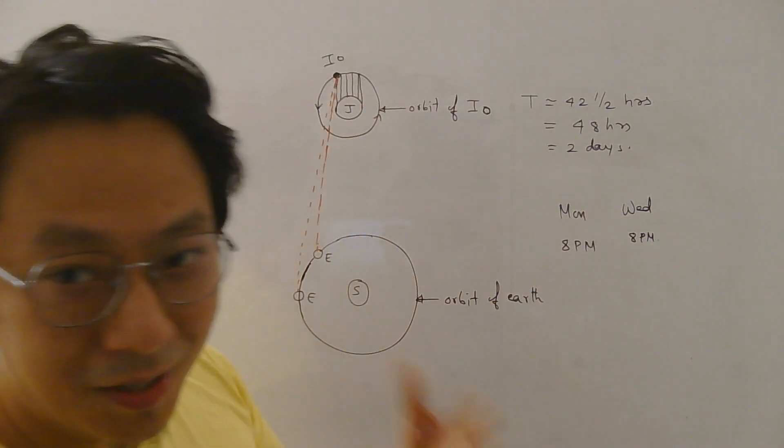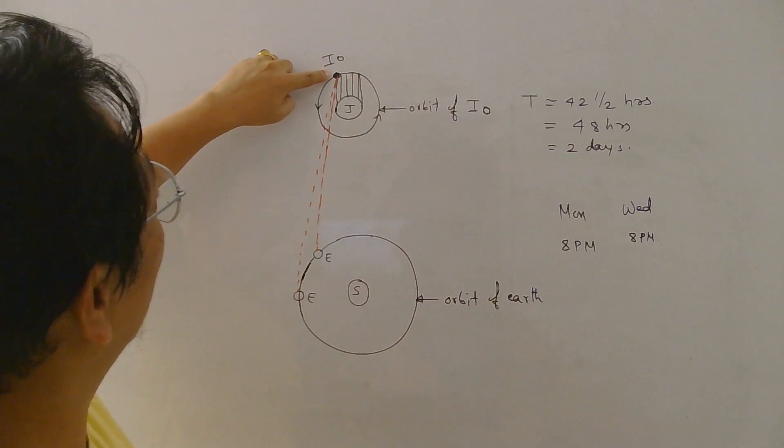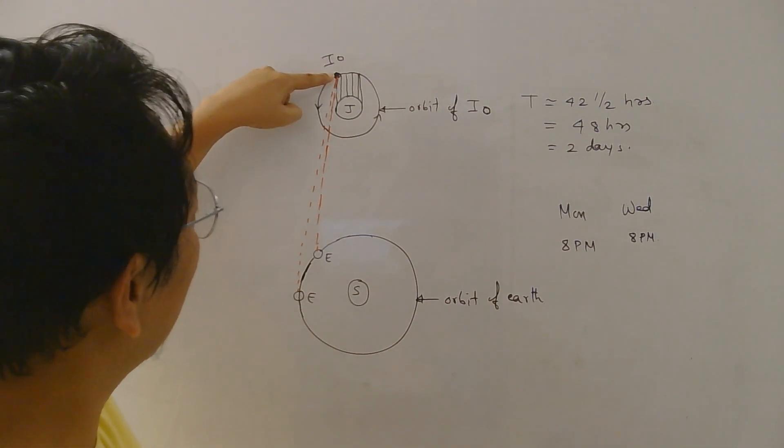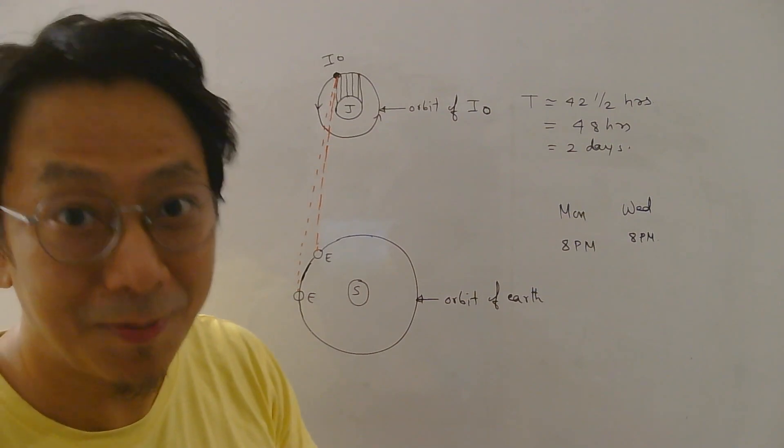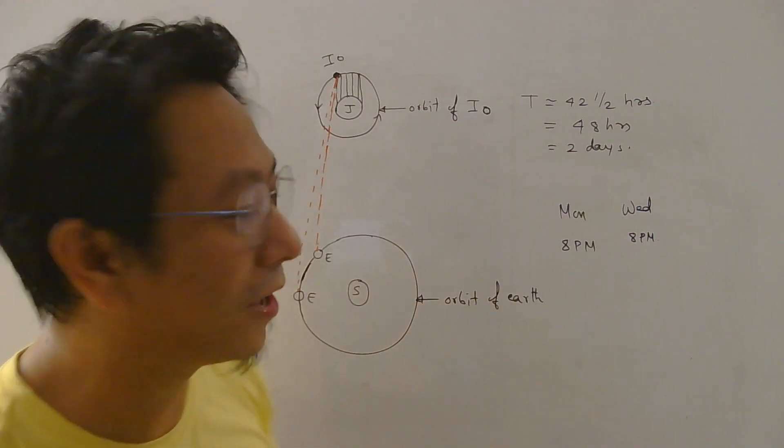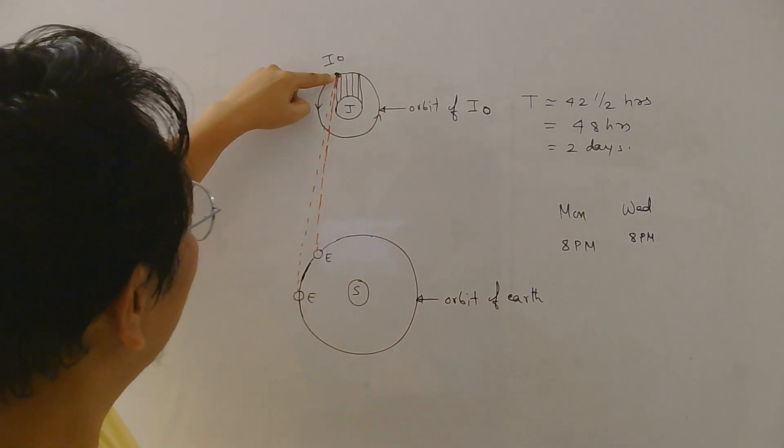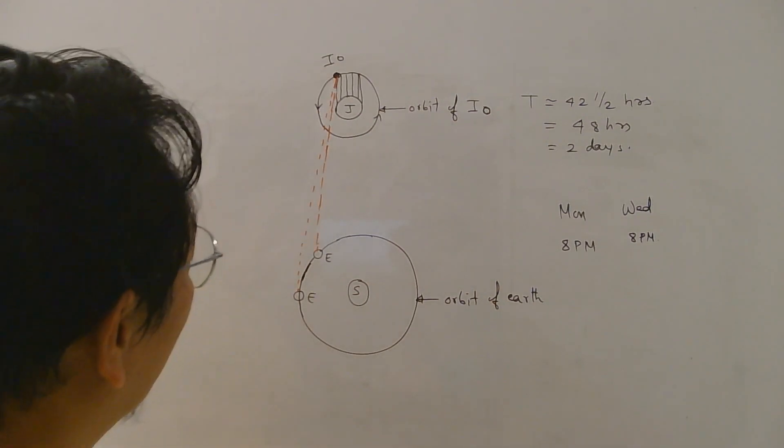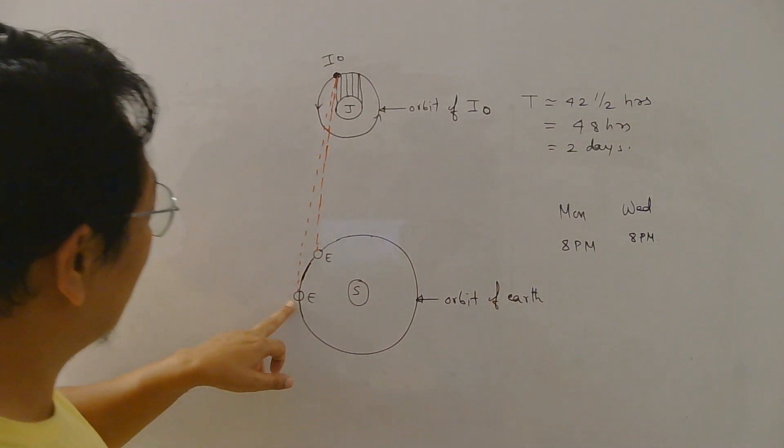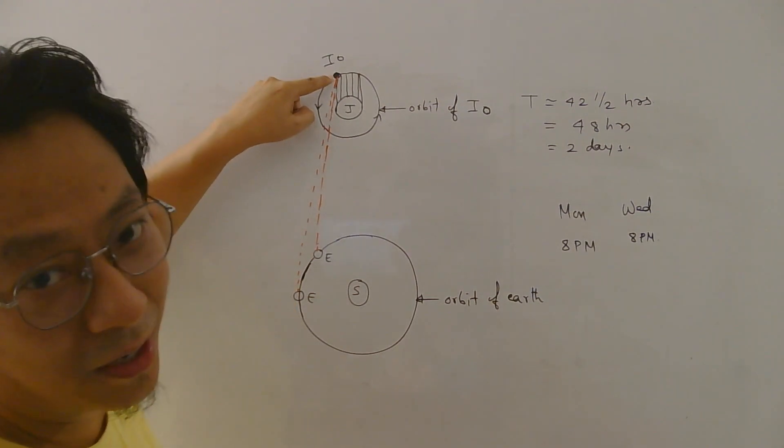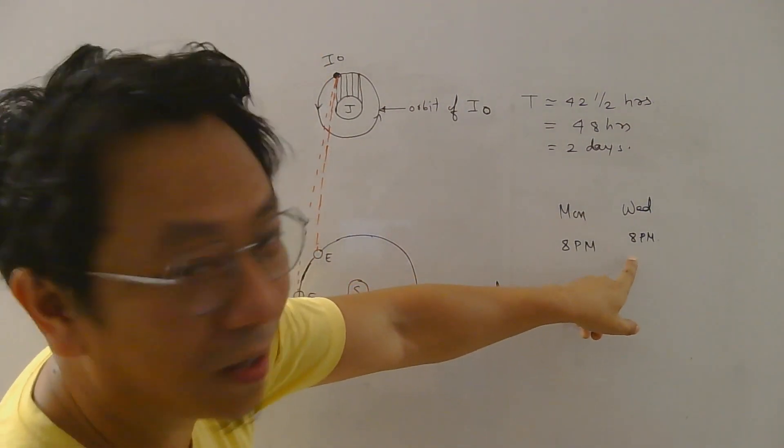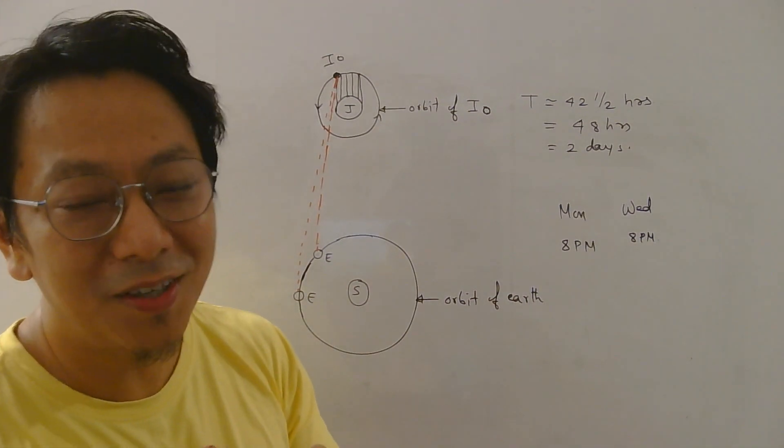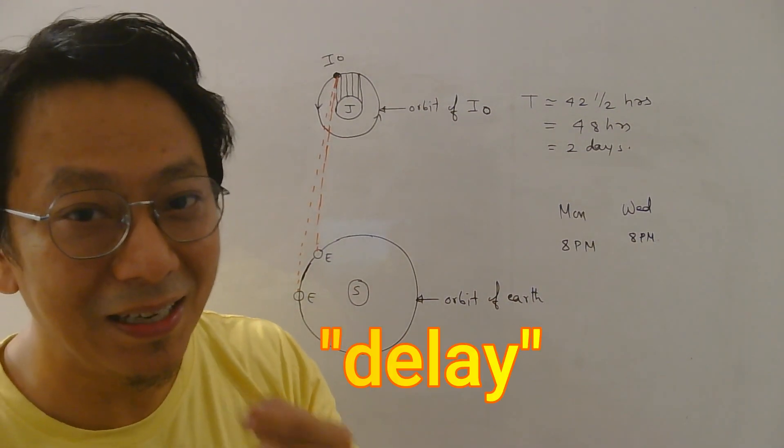So on Wednesday 8 PM Io will be here. Now if light is travelling with infinite speed, which they thought at that time, then light will reach here instantly as it reached here. So therefore Romer should see the moon rise again at what time? 8 PM. Okay.